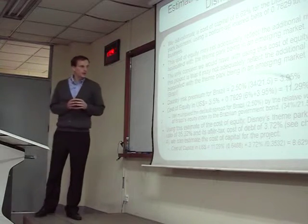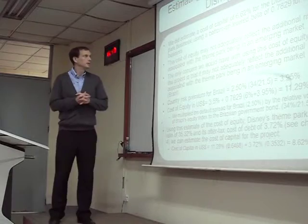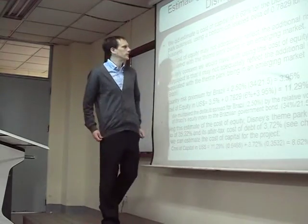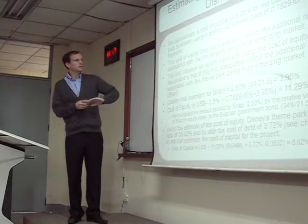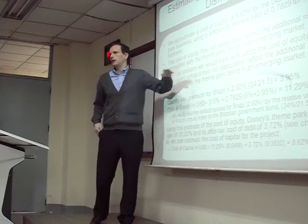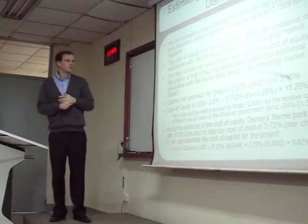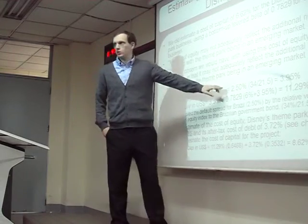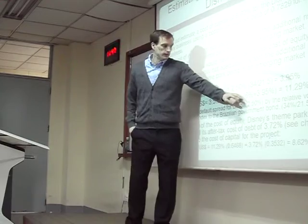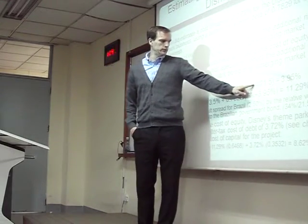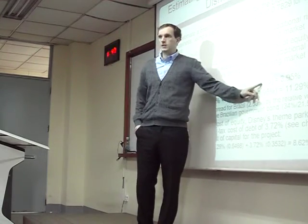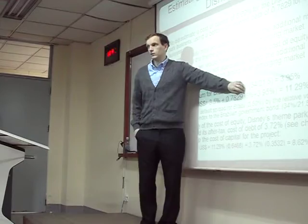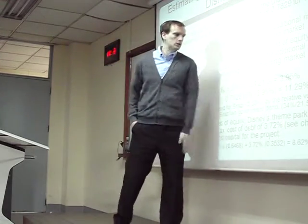We talked about how to calculate this kind of risk premium. The cost of capital in the last slide was 6.6% for Disney in the theme park business. But this cost may not reflect the additional risk associated with Disney being in an emerging market like Brazil. So we are going to add in the country risk premium for Brazil. Here we have the standard deviation in the equity market over the standard deviation in the debt market, and here we have the default spread for Brazilian bonds. We multiply them together and get 3.95%.